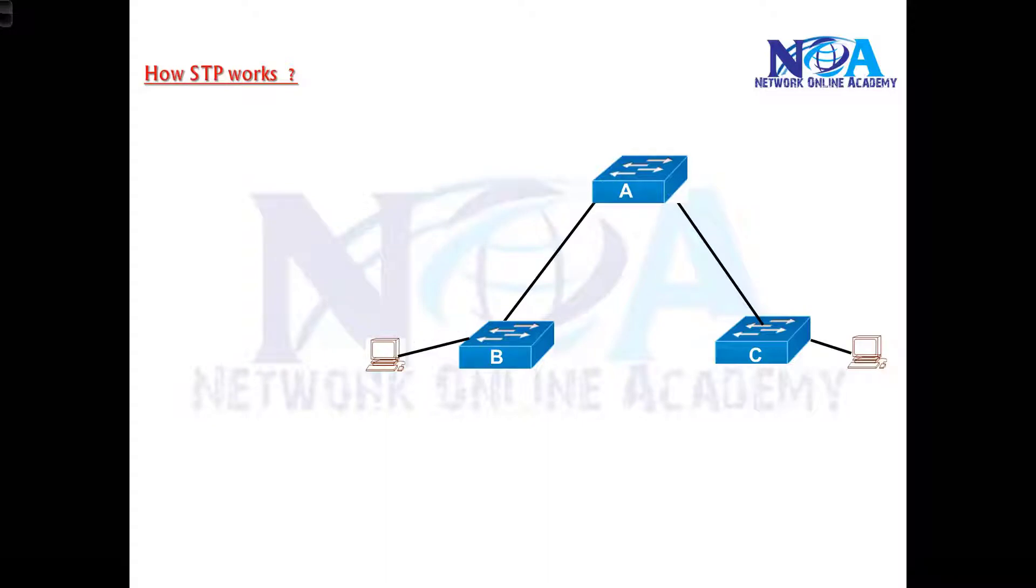If you see when this PC tries to communicate, it will go from switch B to A, A to C. This is a normal flow. In this there are no loops because there is only one path. If a broadcast packet goes, it will go and stop here. It will not come back because we don't have redundant links.